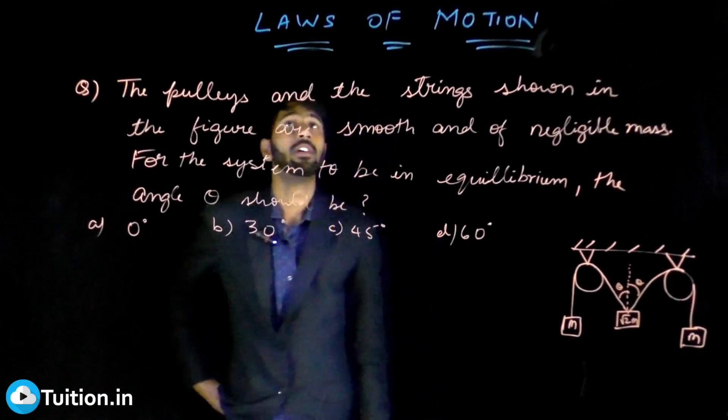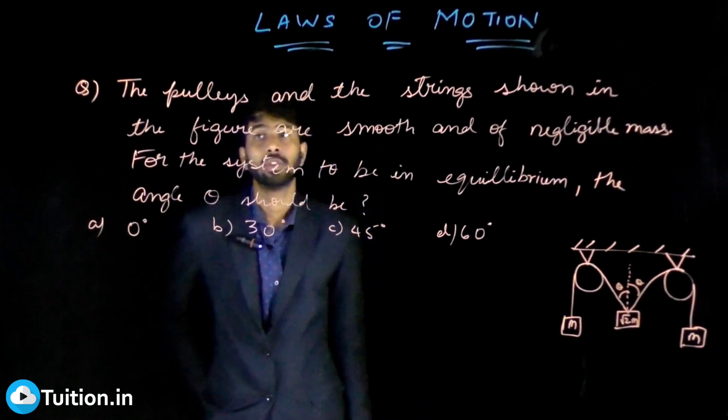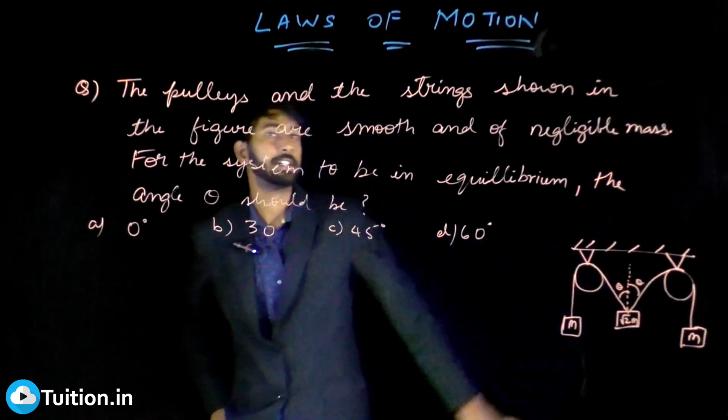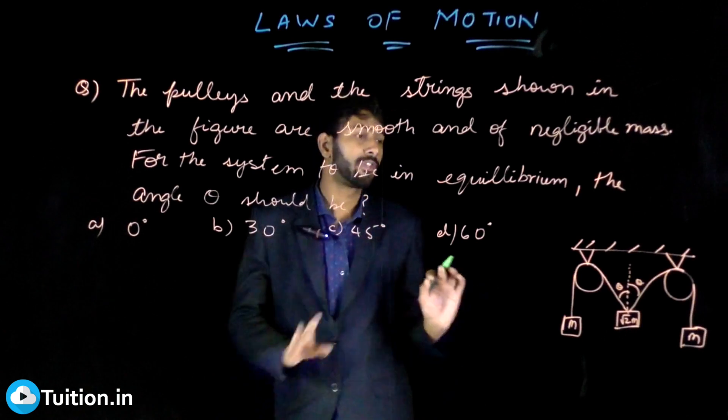Here we have another problem from laws of motion. It says the pulleys and the strings shown in this figure are smooth. What do you mean by smooth? There is no friction, absolutely.